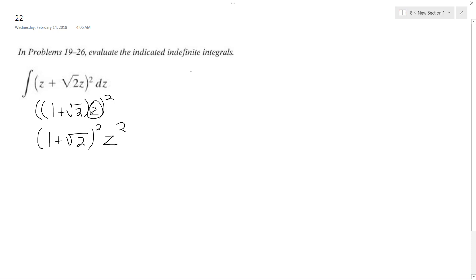So what we'll do here is we'll take the coefficient. In this case, we'll treat the coefficient 1 plus square root of 2 squared. That'll be our coefficient. It's just a constant basically. And then we have z squared and then we'll have the dz.